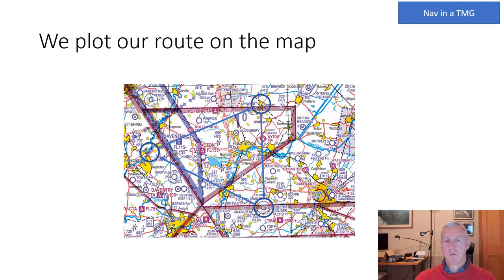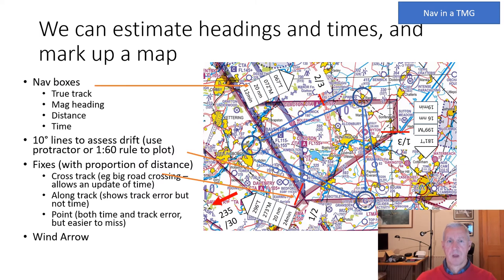We can plot our route on a half-million or quarter-million map. Draw circles around the waypoints you're going to use so you can see what's nearby when you get there, and then draw a reasonably bold line between them.